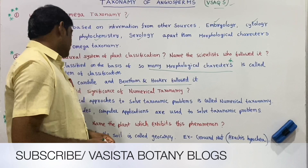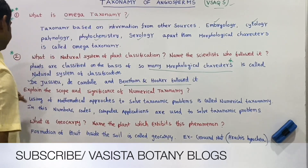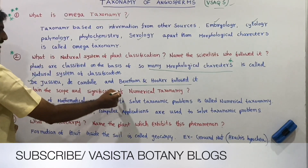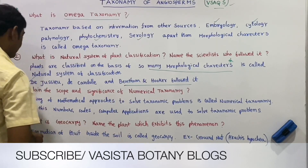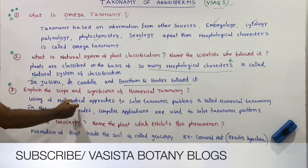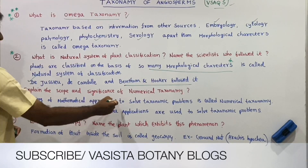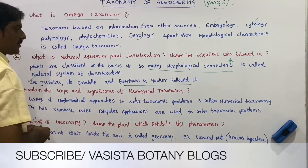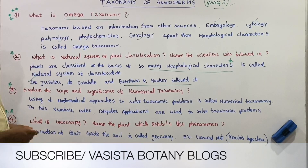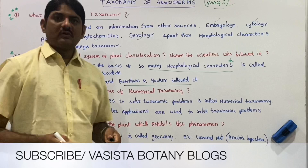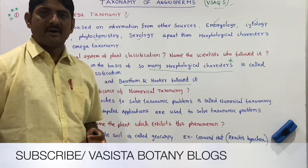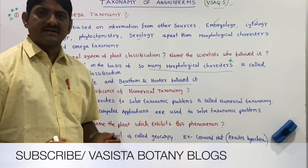Next: Explain the scope and significance of numerical taxonomy. Using mathematical approaches to solve taxonomy problems is called numerical taxonomy. Taxonomy problems are solved using mathematical approaches, code numbers, and computer applications.